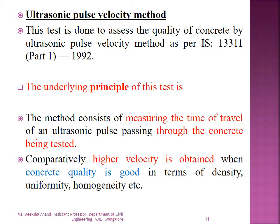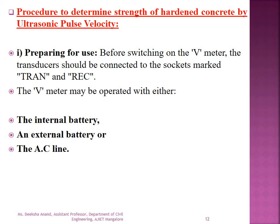The next test is the ultrasonic pulse velocity (UPV) method, done to assess the quality of concrete as per IS 13311 Part 1 (1992). The underlying principle of this test is measuring the time of travel of an ultrasonic pulse passing through the concrete being tested. Comparatively higher velocity is obtained when the concrete quality is good in terms of density, uniformity, and homogeneity.